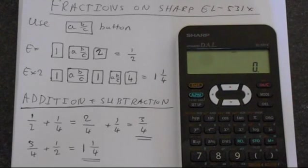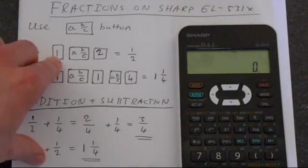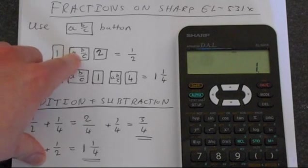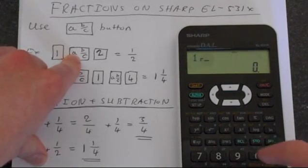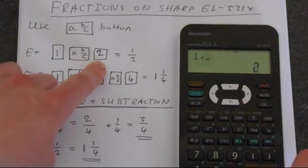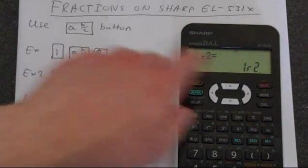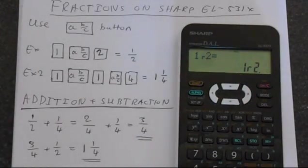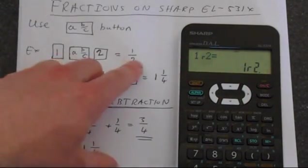This is the button that you use to work with fractions. So for example, if we put in 1, then press AB over C, and then 2, we get 1R2, which is the same as 1 half.